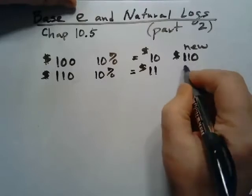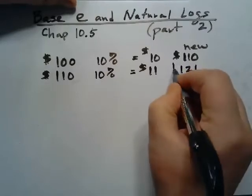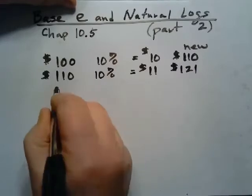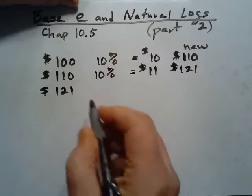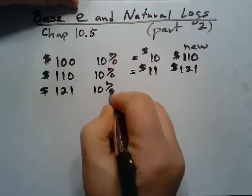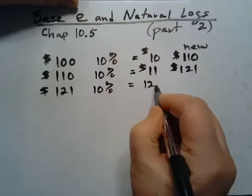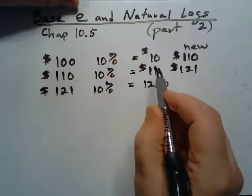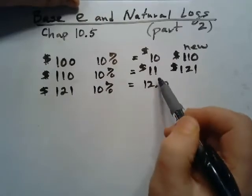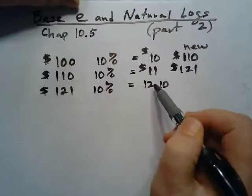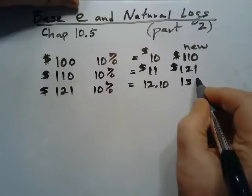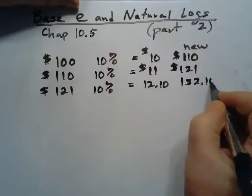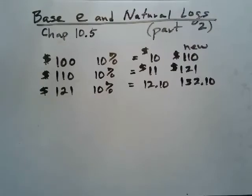Adding that to what you had at the beginning of the year, now you've got a hundred and twenty-one dollars. Take that and put it in the bank again for another year at ten percent, and this year you're going to earn twelve dollars and ten cents. It's growing faster — the first year it grew a dollar, this year a dollar ten — so now we have a hundred and thirty-two dollars and ten cents. Every year we earn interest it accrues a little quicker and quicker.